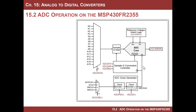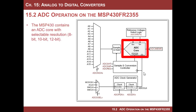This is the block diagram for the ADC. A few things to notice: number one, there's only one core. You only have one of these things, and you can program its resolution to be 8 bits, 10 bits, or 12 bits. So you can get resolution up to 12 bits, but you can also program it to have other resolutions.